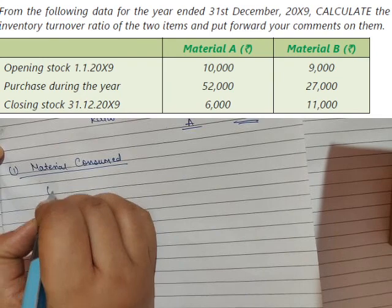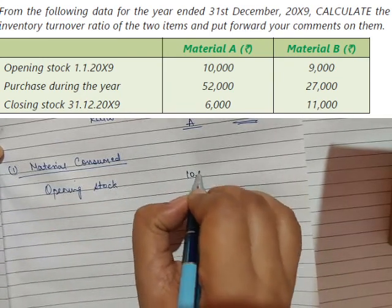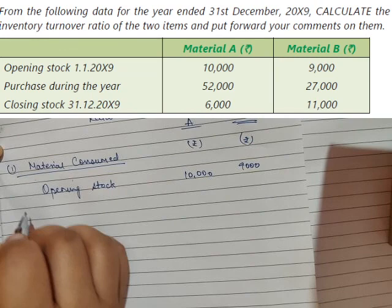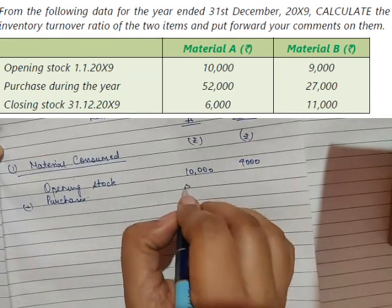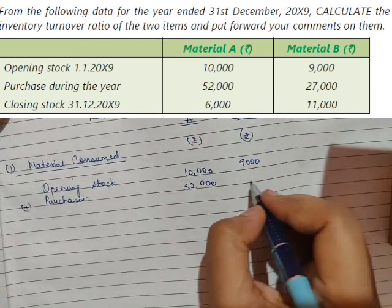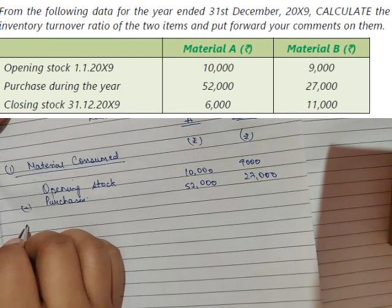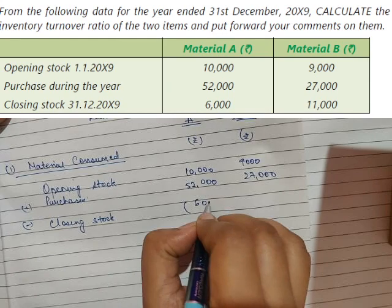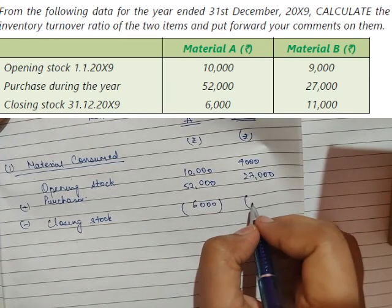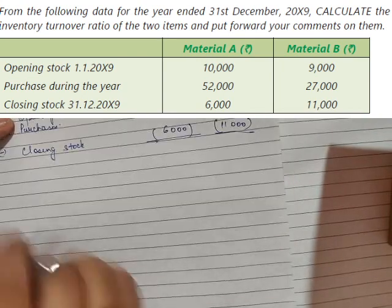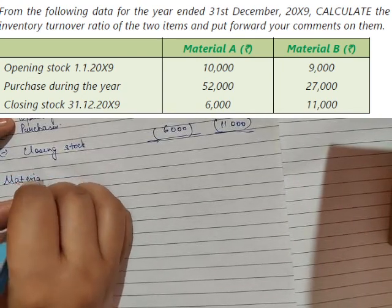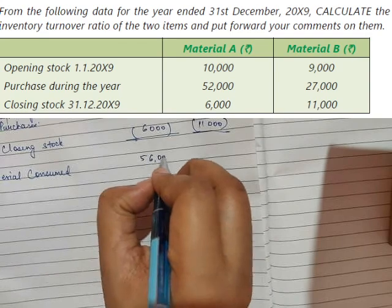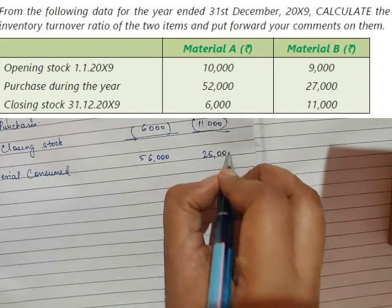Opening stock of material A is ₹10,000 and material B is ₹9,000. Plus purchases: ₹52,000 for material A and ₹27,000 for material B. Minus closing stock: ₹6,000 for material A and ₹11,000 for material B. So material consumed is ₹56,000 for material A and ₹25,000 for material B.